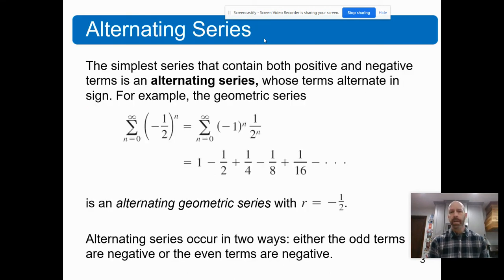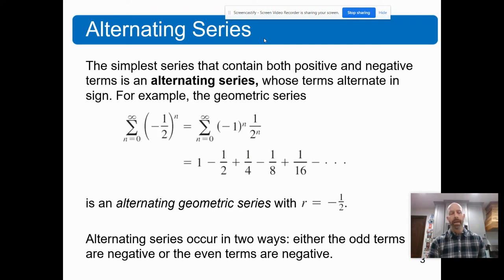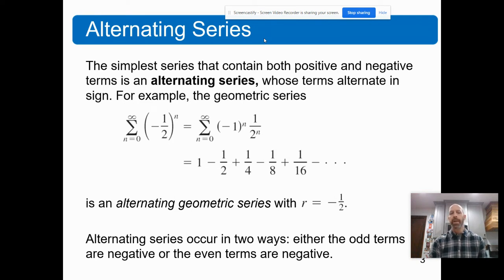The simplest series that contains both positive and negative terms is called the alternating series — the signs flip back and forth from positive to negative. Here we have an example of an infinite series starting from zero to infinity: negative one half to the n, which can be rewritten by pulling that negative one to the front. The first few terms are: one minus one half plus one fourth minus one eighth plus one sixteenth, et cetera. This is the alternating geometric series with R equaling negative one half.